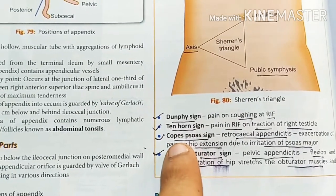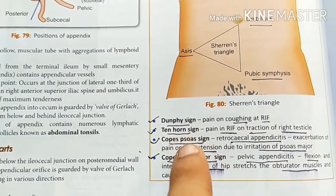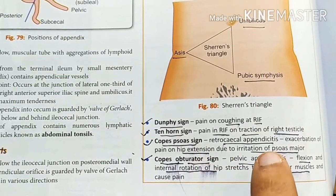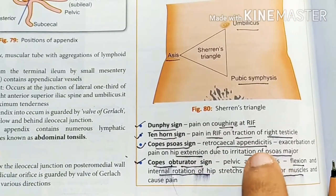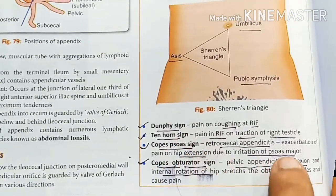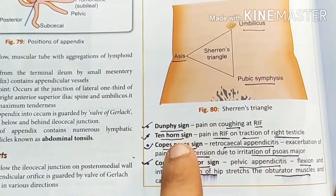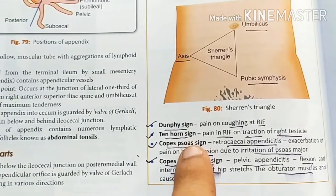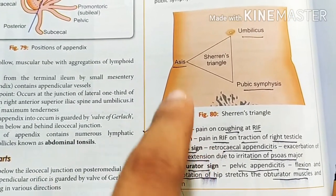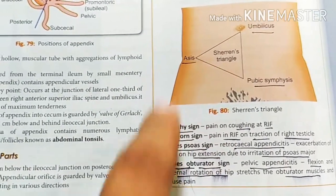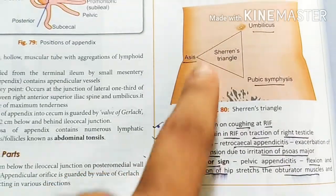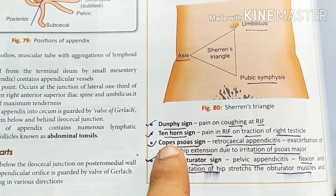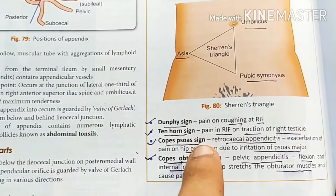Next is Cope's psoas sign. This occurs when there is irritation of the psoas major muscle. When you extend the hip, this produces irritation of the psoas major, and that is called Cope's psoas sign.